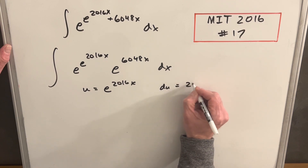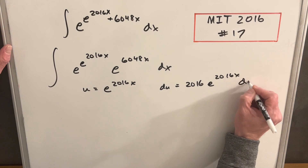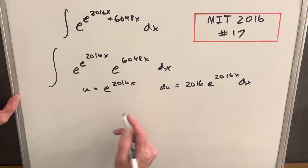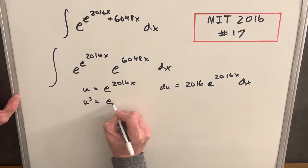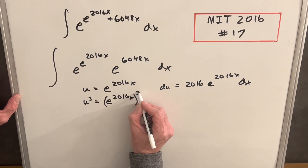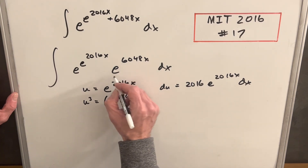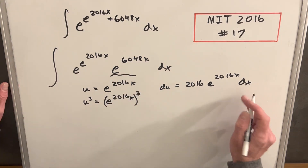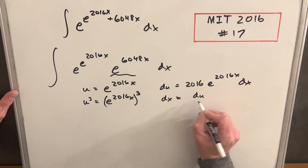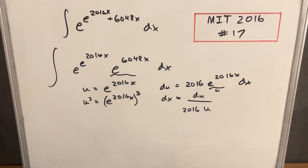Our du is going to be 2016 e to the 2016x dx. And like I mentioned, this being 3 times 2016, I can write u-cubed as e to the 2016x cubed — just noticing when you multiply the 3 in, you get back to 6048. So this term is going to be u-cubed. Rearranging and solving for dx, we divide both sides and get du over 2016, but this piece is just u, so we have du over 2016u.